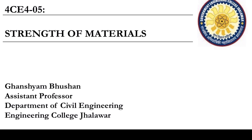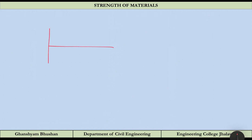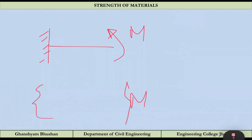Today we are going to start our new chapter which is the Theory of Bending. Whenever we refer to bending, we are referring to the pure bending condition. For example, if this is a cantilever beam subjected to a couple M at the free end, the bending moment diagram will show a sagging bending moment of amount M, which is constant throughout the beam.